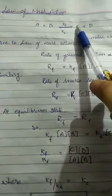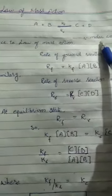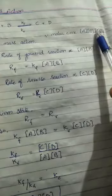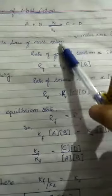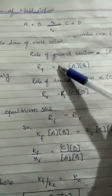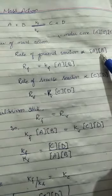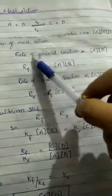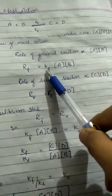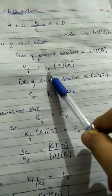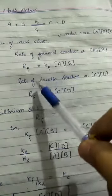The forward arrow represents the forward reaction with rate constant Kf, and Kr represents the reverse reaction. Molar concentrations of reactants and products are written in square brackets. According to the Law of Mass Action, the rate of forward reaction (Rf) is directly proportional to the product of molar concentrations of reactants. Replacing the proportionality sign with constant Kf, we write: Rf = Kf[A][B].